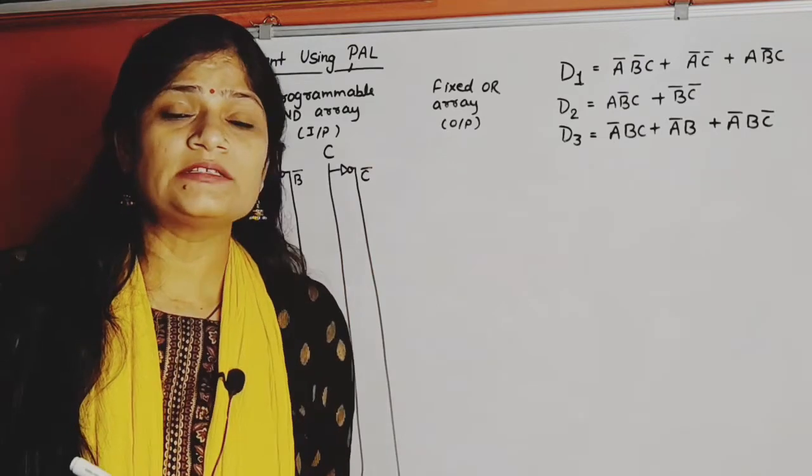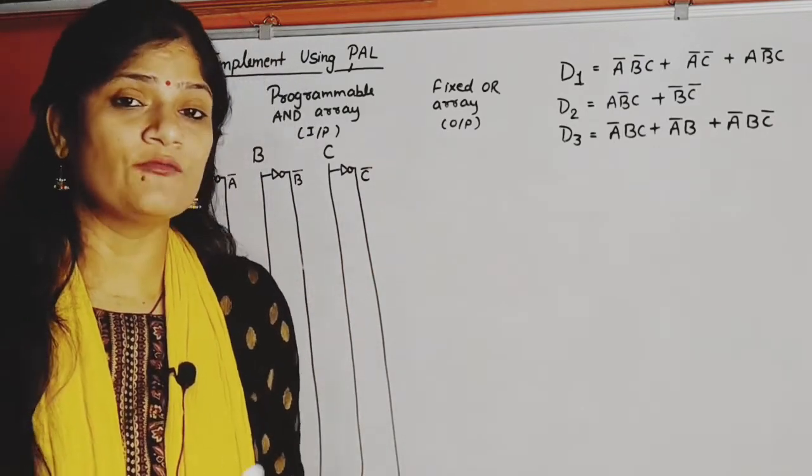How many AND gates are required for each function? In case of PAL, where OR array is fixed, we need to count the number of product terms.